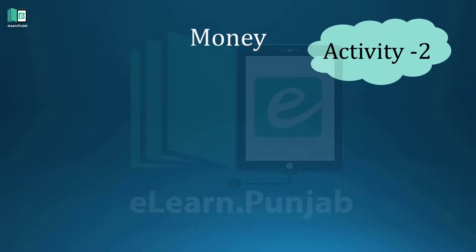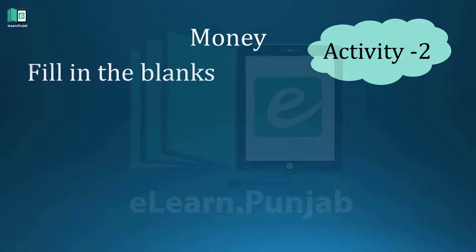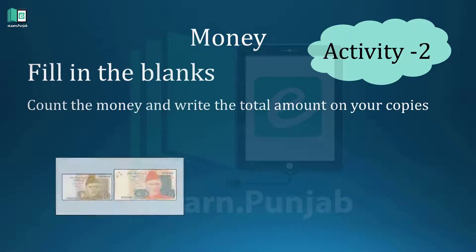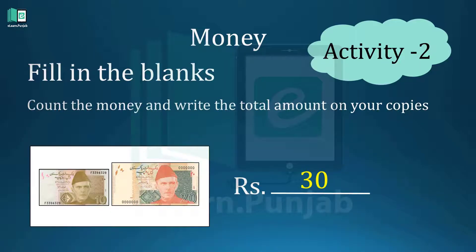Activity two: fill in the blanks. Count the money and write the total amount in your copies. The total amount is rupees thirty.